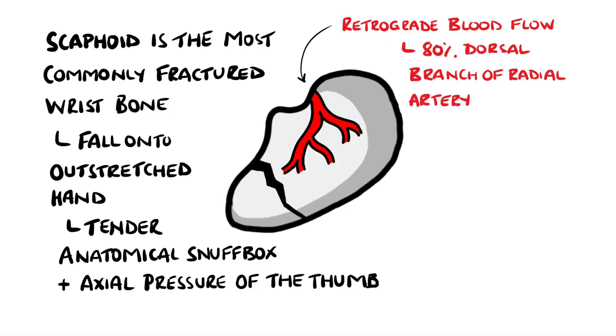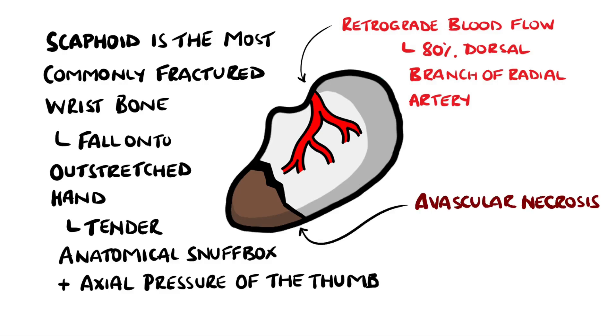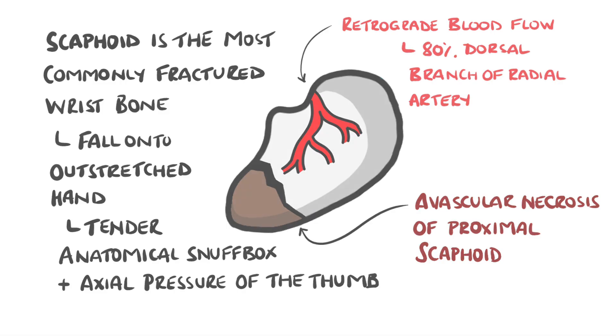If the scaphoid is fractured, blood might not be able to reach the proximal end, giving avascular necrosis of the proximal part of the scaphoid.